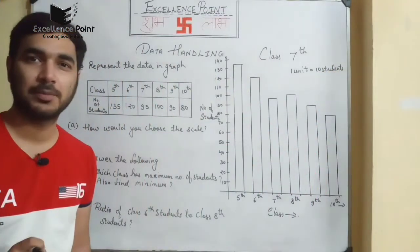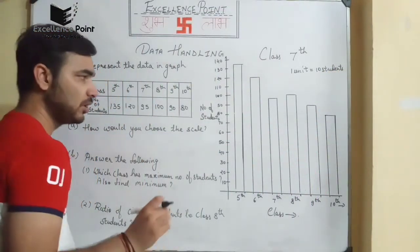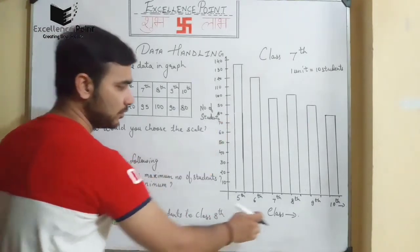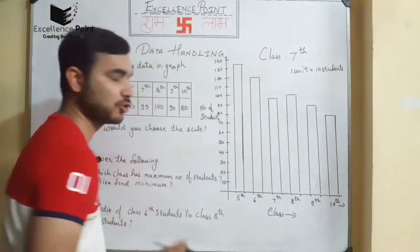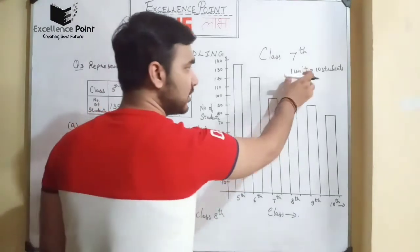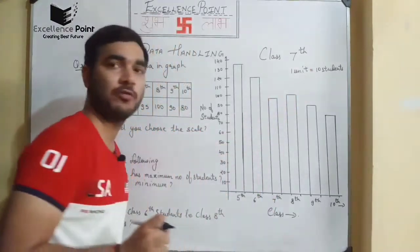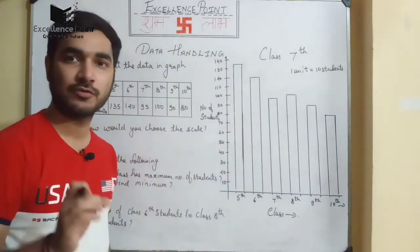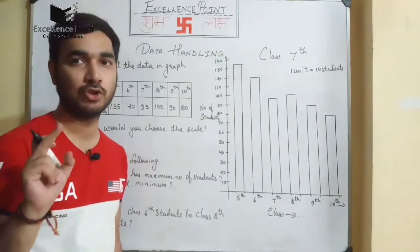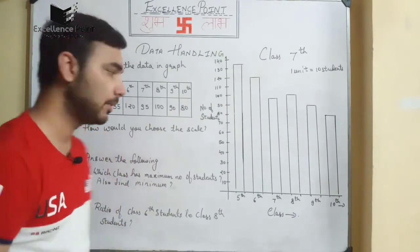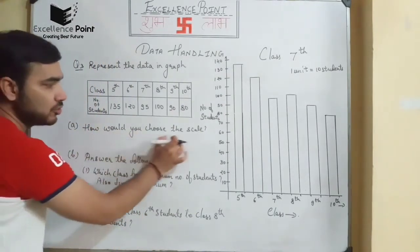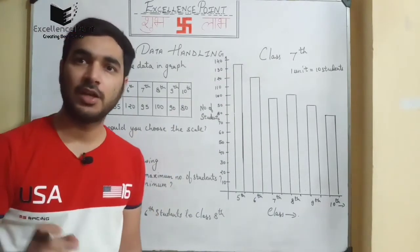We have completed the graph. You will observe that the number of students and the class label should always be written on the graph, and the scale should always be written at the top — these are important things to remember. Now, how would you choose a scale for the graph?